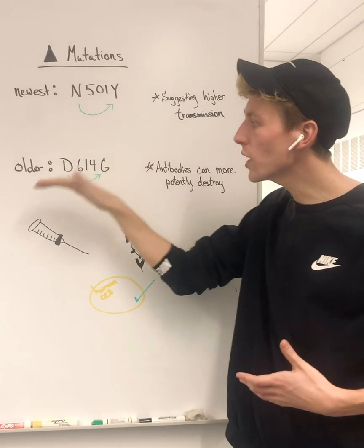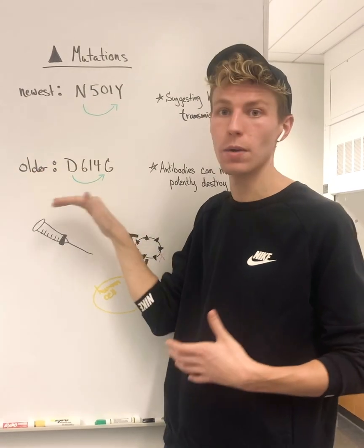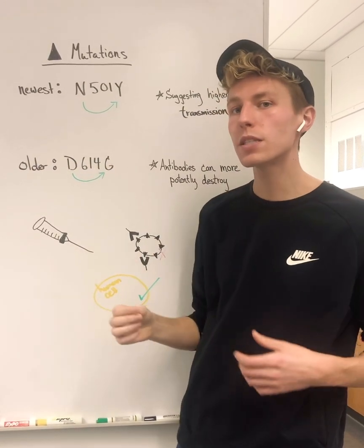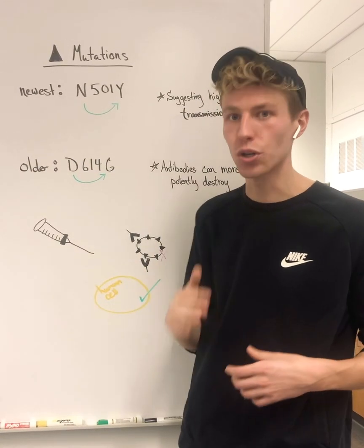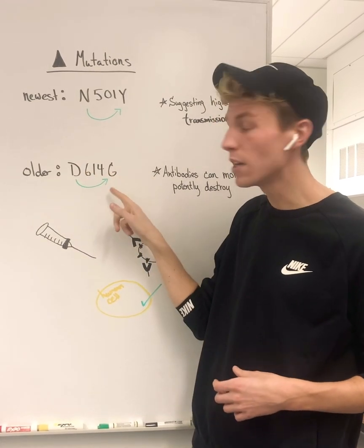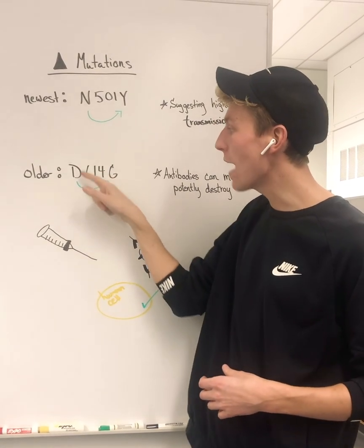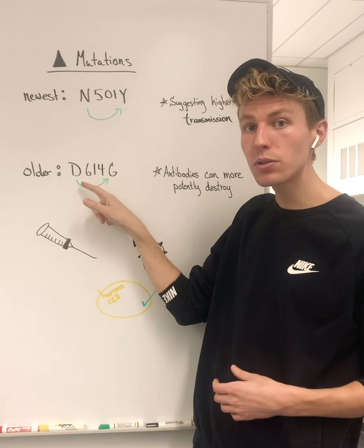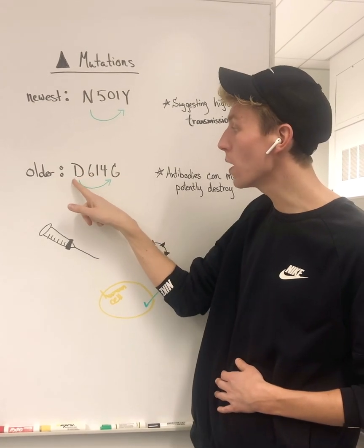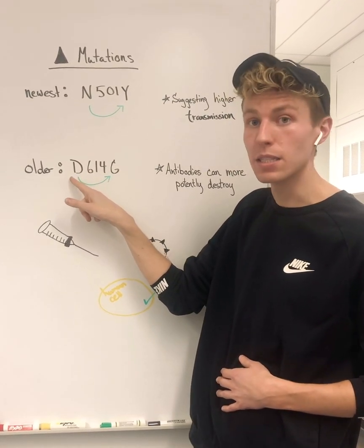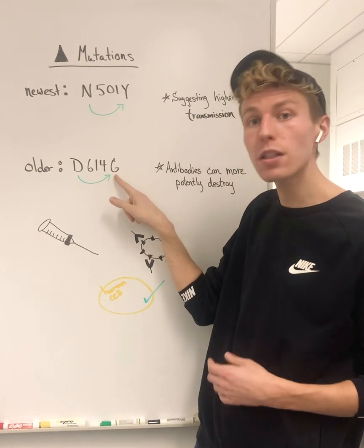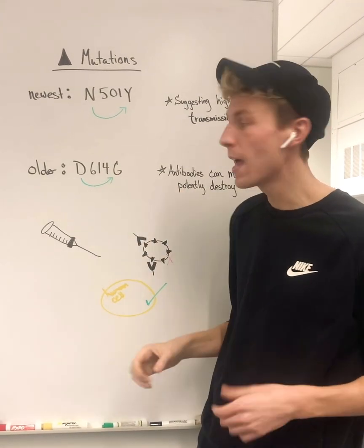But if we look at an older form of the mutation of SARS-CoV-2 — one that was discovered back in early summer known as D614G — again, at the instructions for the spike protein at position 614, one amino acid known as aspartic acid has now been changed to another amino acid known as glycine.